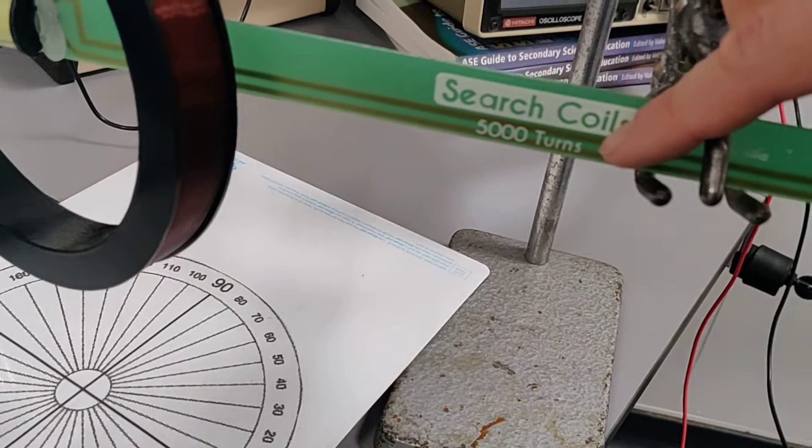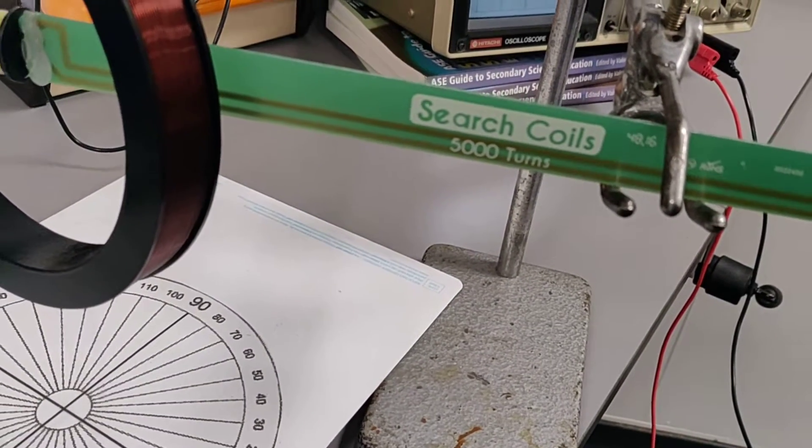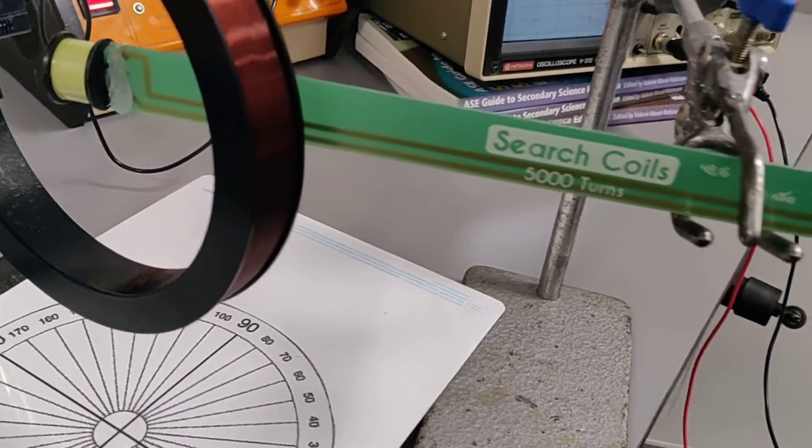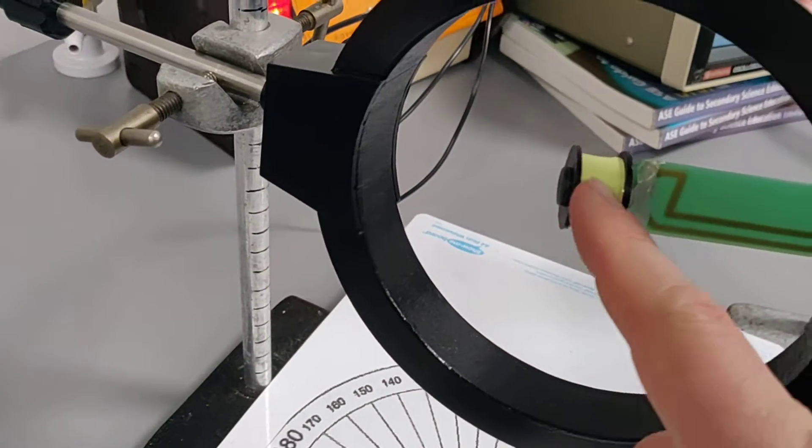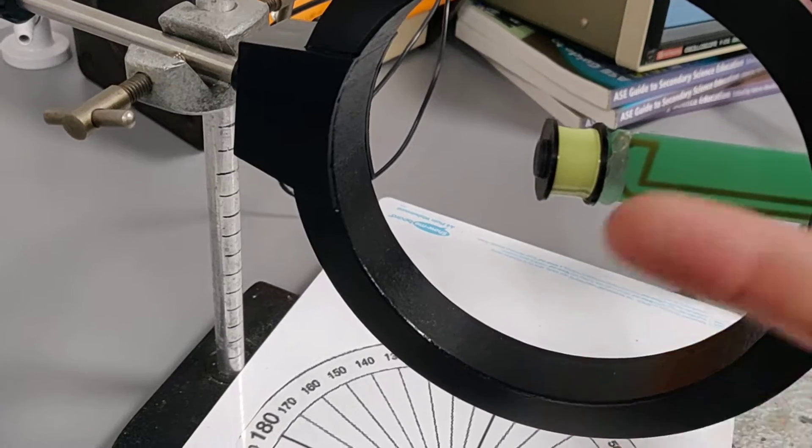Especially if you're trying to use a search coil that perhaps doesn't have 5,000 turns on it. Maybe it has less. Or you've tried to make a homemade one that doesn't have as many turns. I should just say that inside there, you can't see the coils, but it's a very fine copper wire that's wrapped around 5,000 times. Quite delicate.